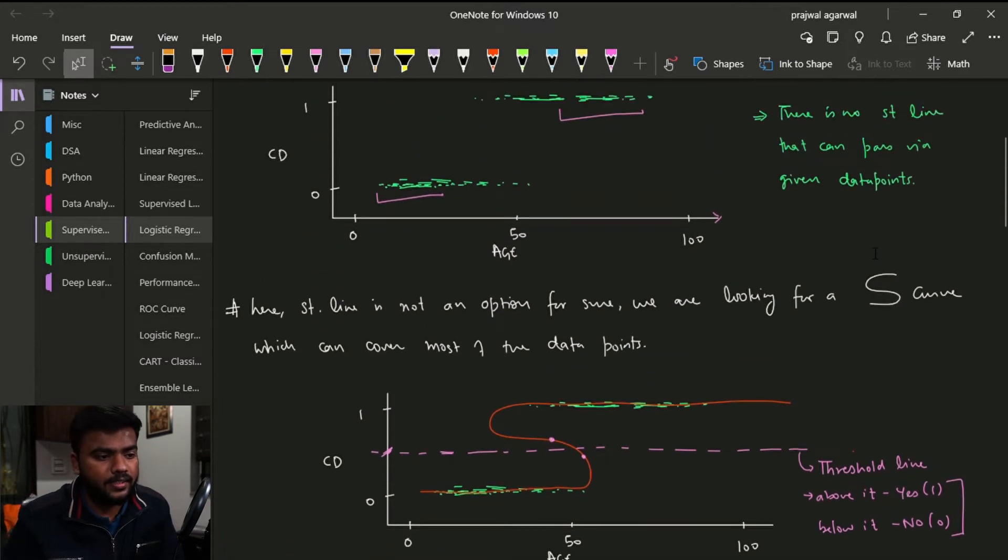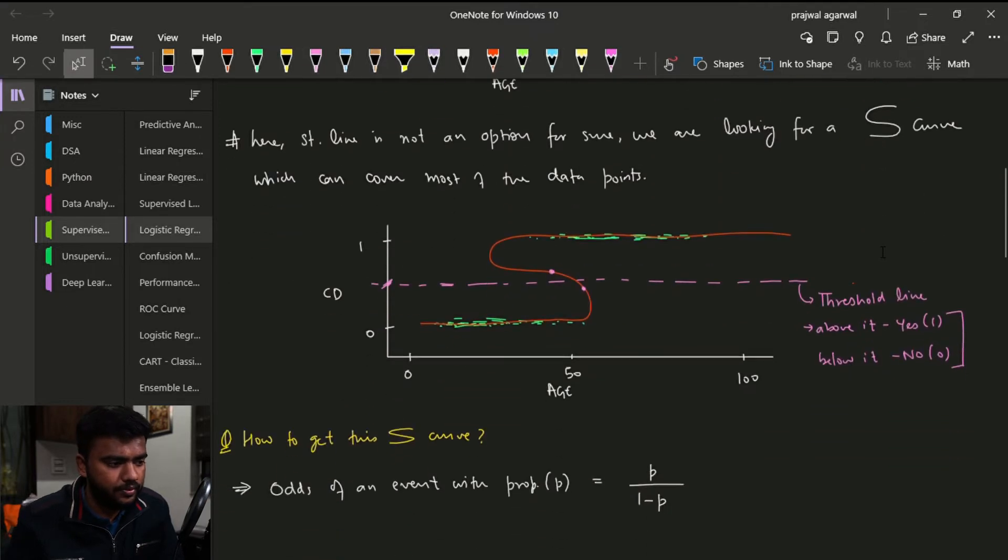So what we are looking for is something like an S curve. The curve like this. So we need a curve like this to fulfill the needs of our particular problem, and we will talk about threshold later. So how do we get this S curve?